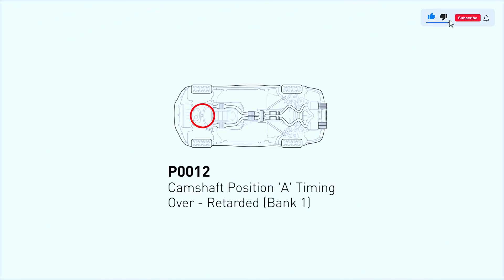So what exactly does this code mean? P0012 occurs when the engine control module detects that the camshaft timing is too retarded, or delayed, on bank 1. Essentially, the camshaft is not in the right position at the right time, which can lead to poor engine performance and even engine damage if left unchecked.